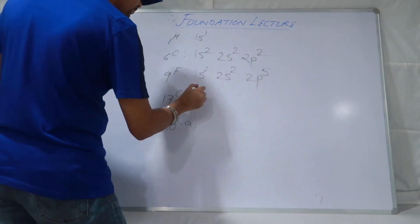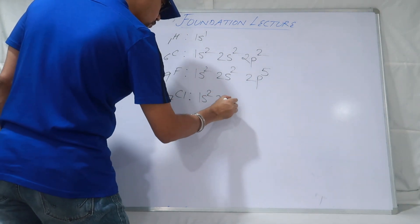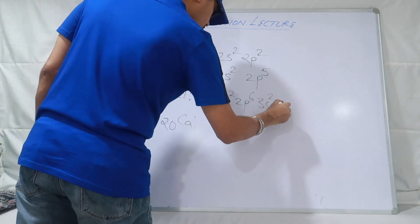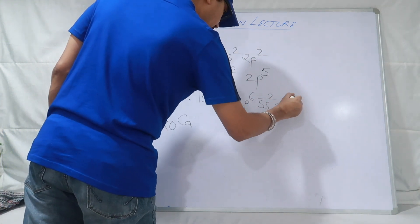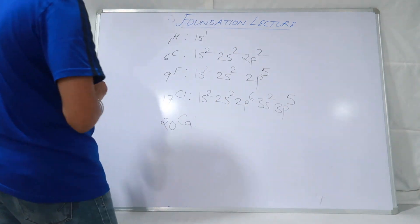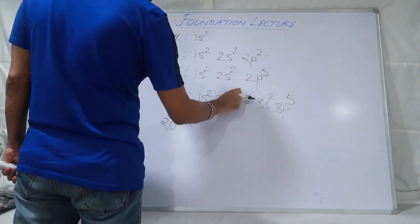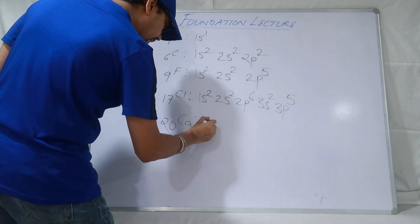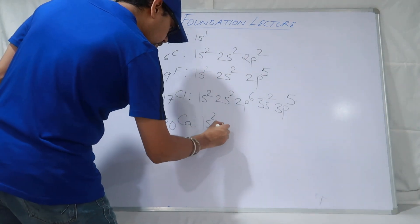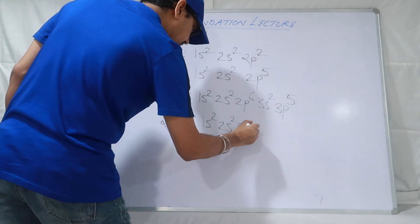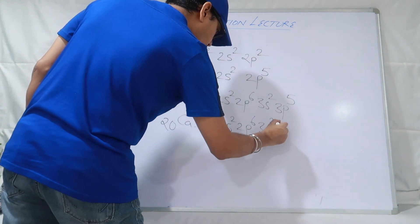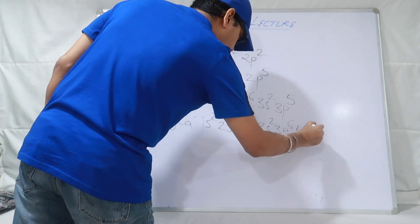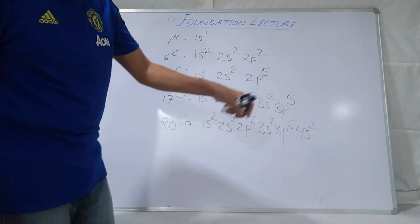Ab Chlorine dekhte hain: 1s2, 2s2, 2p6, 3s2, 3p — usi family ka hai to 5 — 3p5. Count karke dekh sakte ho: 17 total hai. Ab Calcium dekhte hain: 1s2, 2s2, 2p6, 3s2, 3p6, 4s2. Count karo — 20 aayega total. This is how you write the electronic configuration in 11th and 12th class.